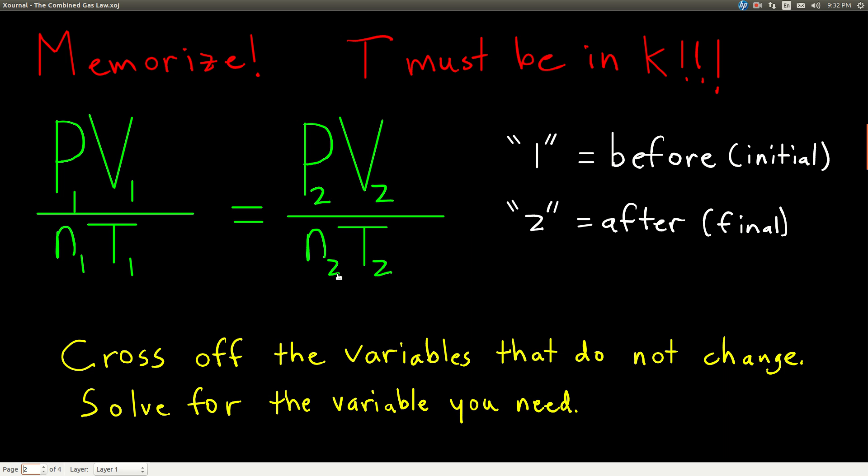So the way you use this, once you recognize it's a combined gas law problem because something's changing, is you figure out what's not changing and cross it off on both sides. What you're left with once you cross off the variables that do not change is going to be one of the small gas laws that you'll see in most chemistry textbooks. You know, they're named Charles' law, Boyle's law, Avogadro's law, Gay-Lussac's law, and some others. I don't really care if you know the names because you can get all of those just by knowing the combined gas law.